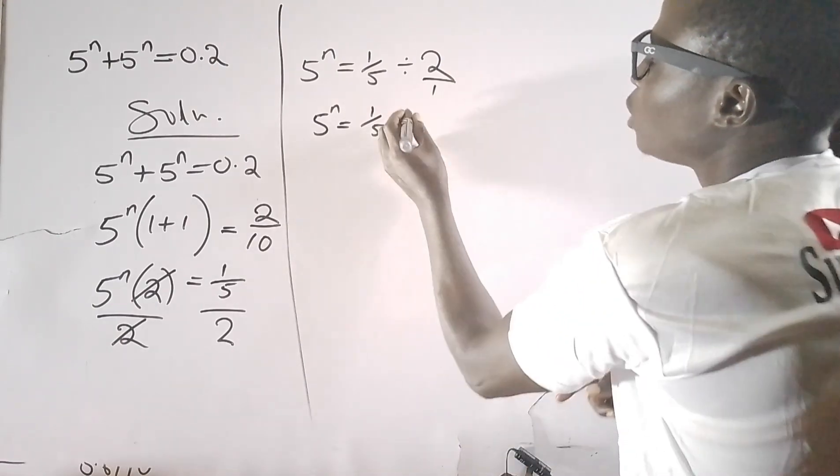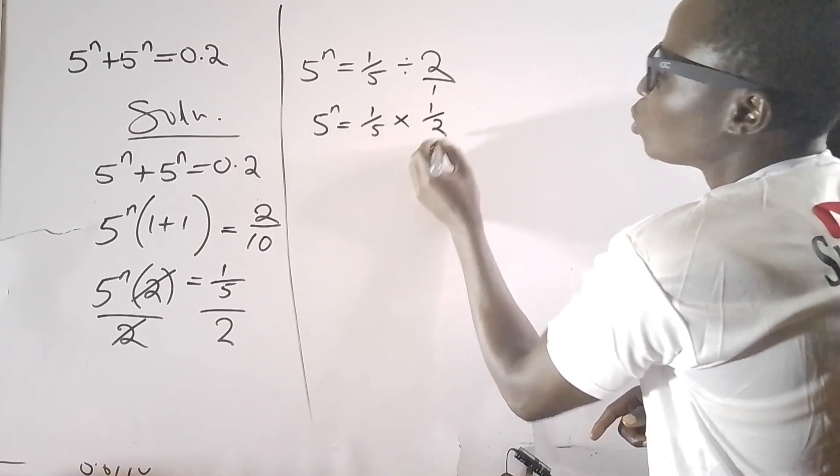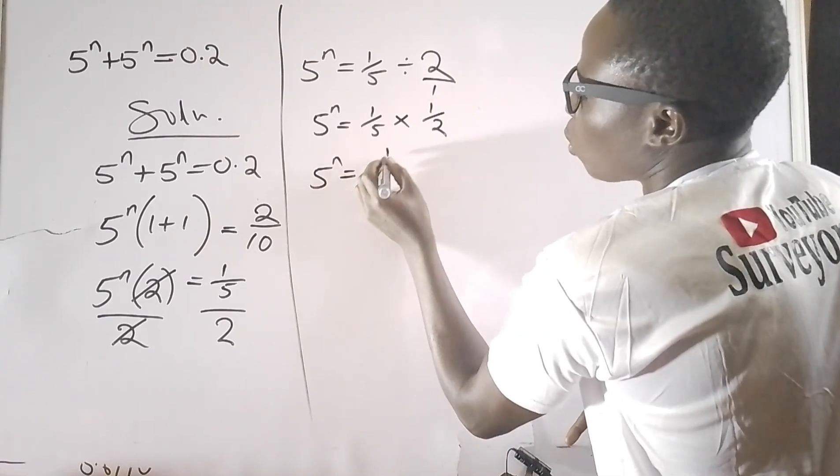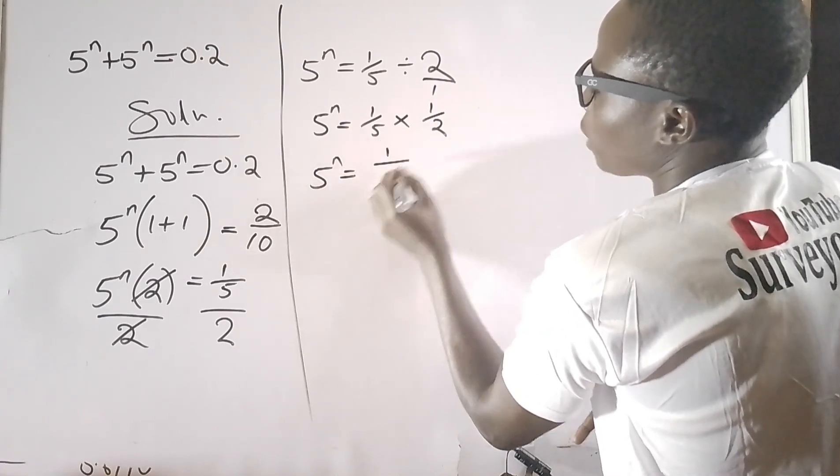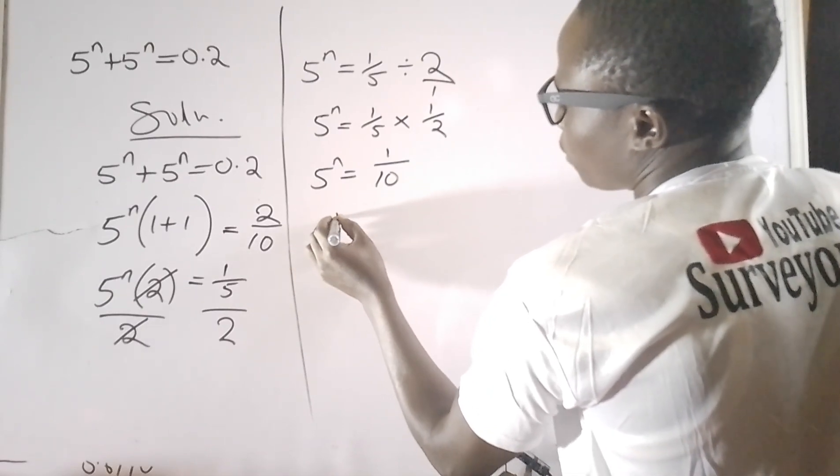When I change it to multiplication, I will have 1 over 2. That means 5^n equals 1 over (5 times 2 is 10), so 5^n equals 1 over 10.